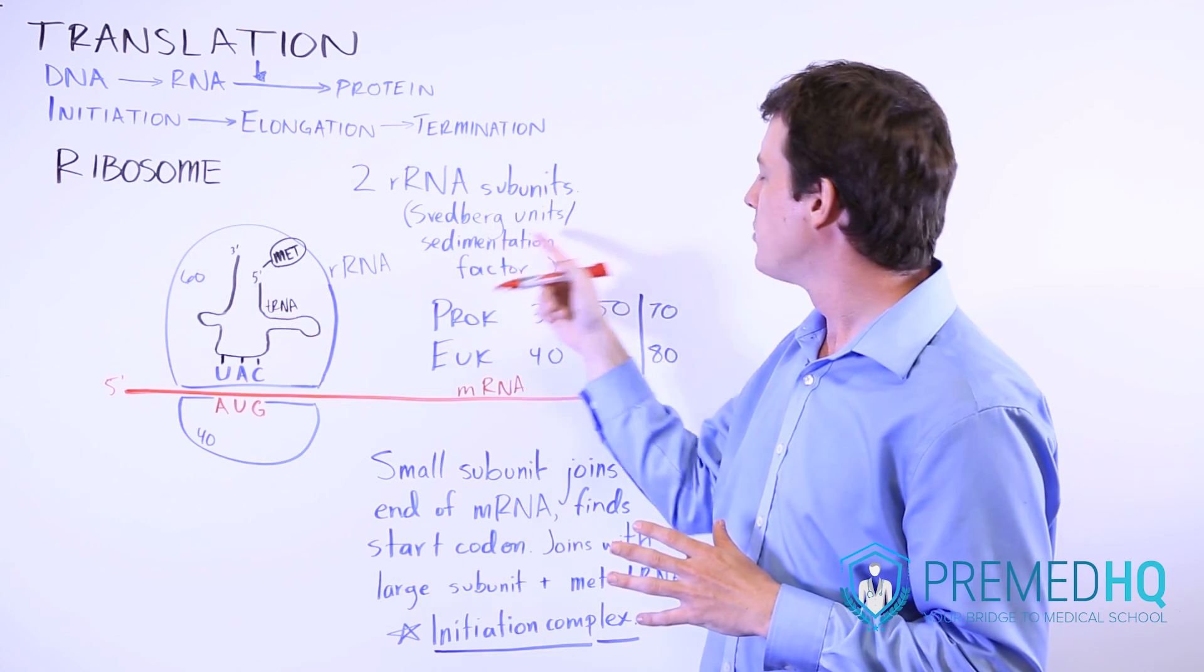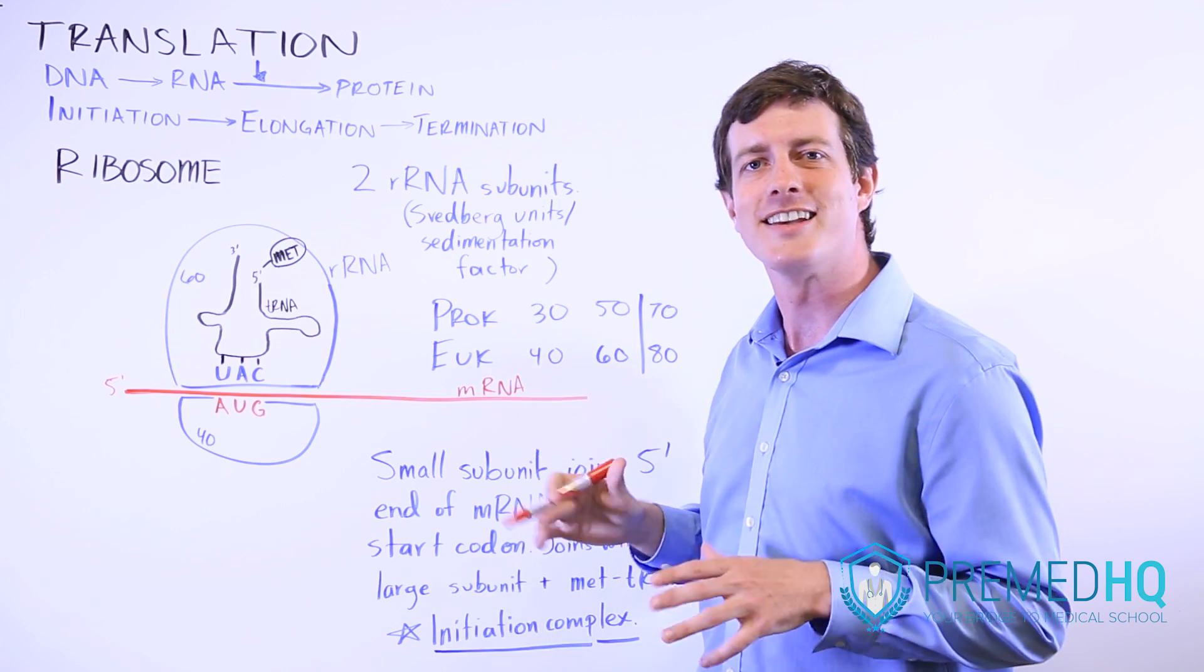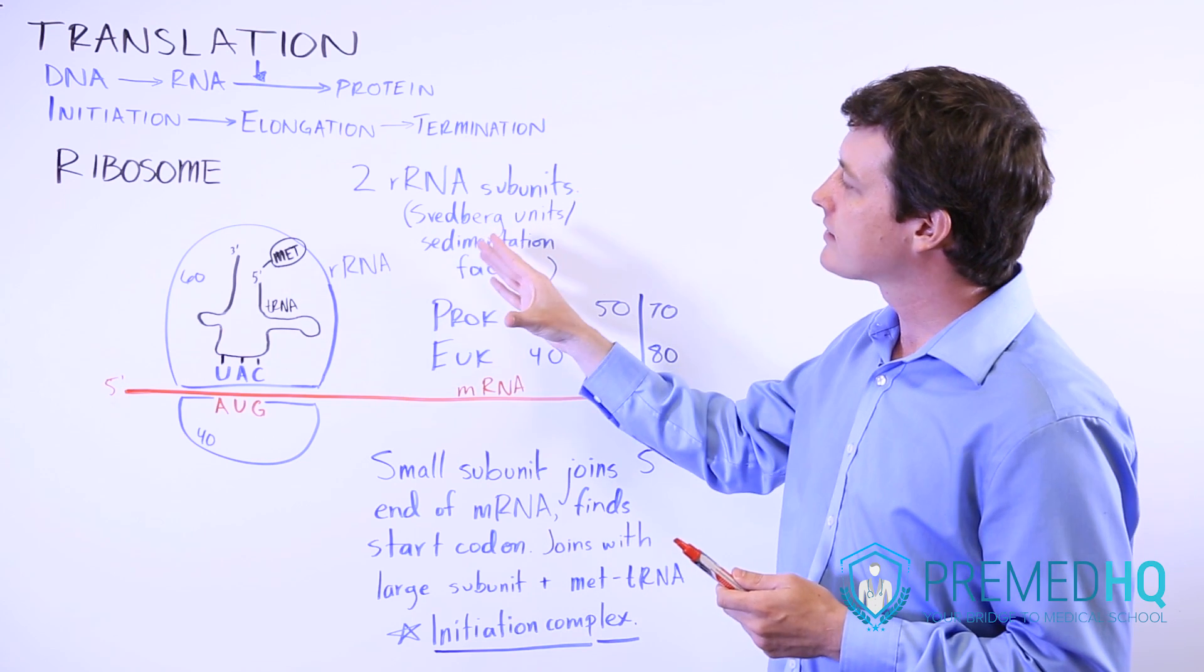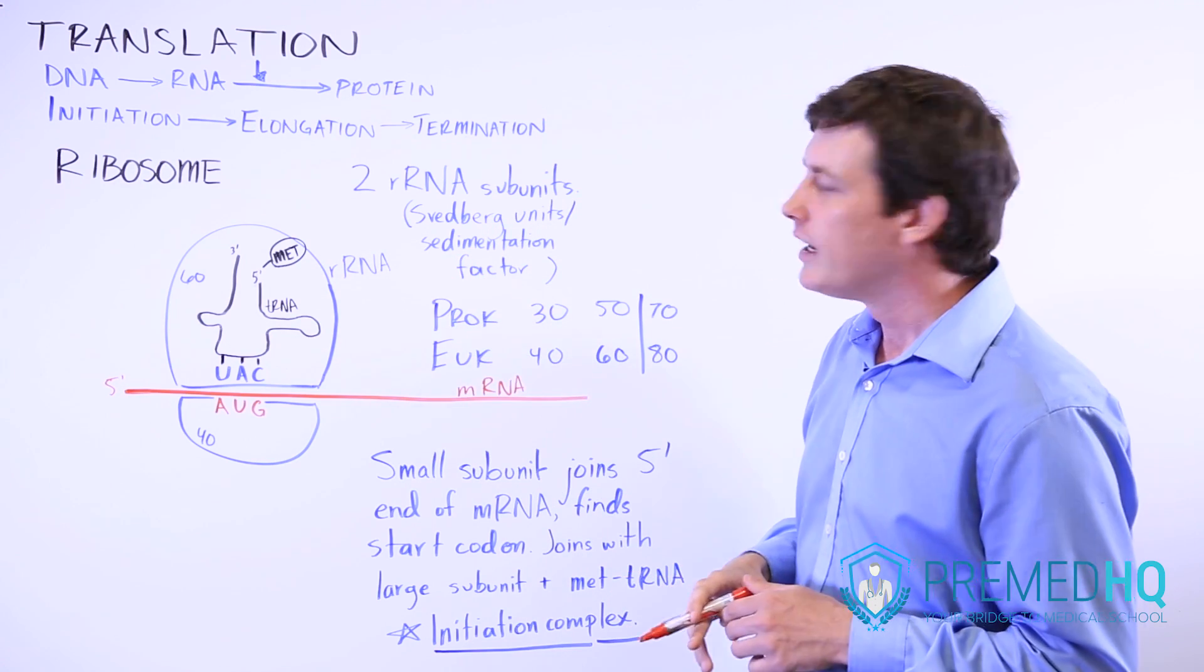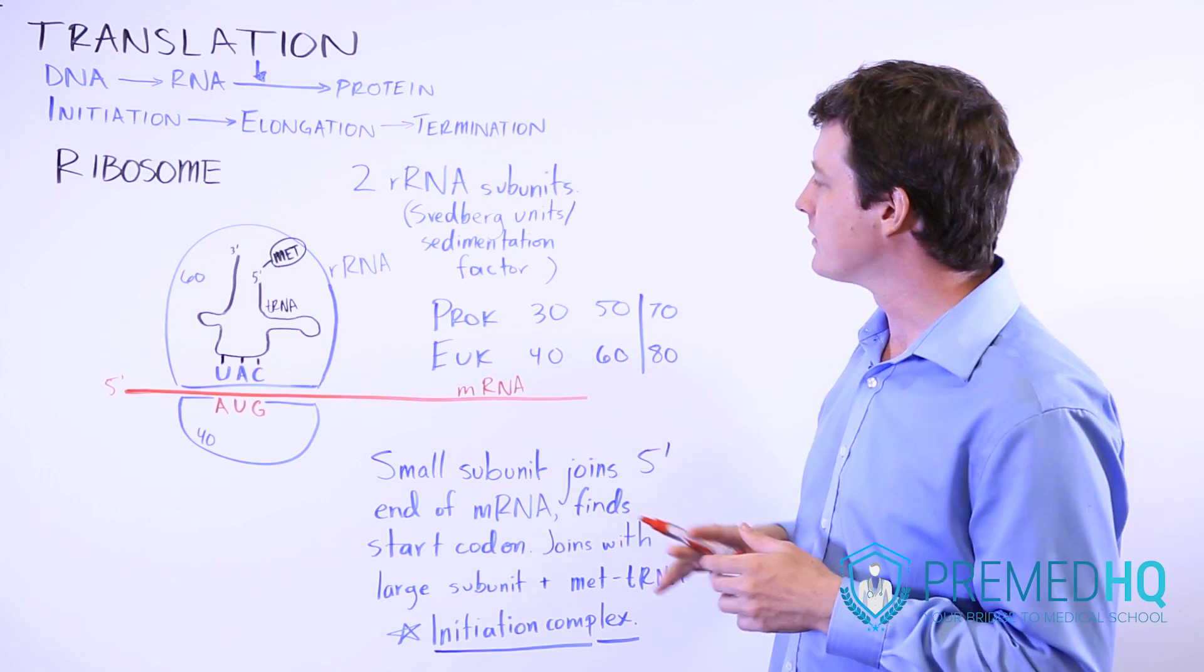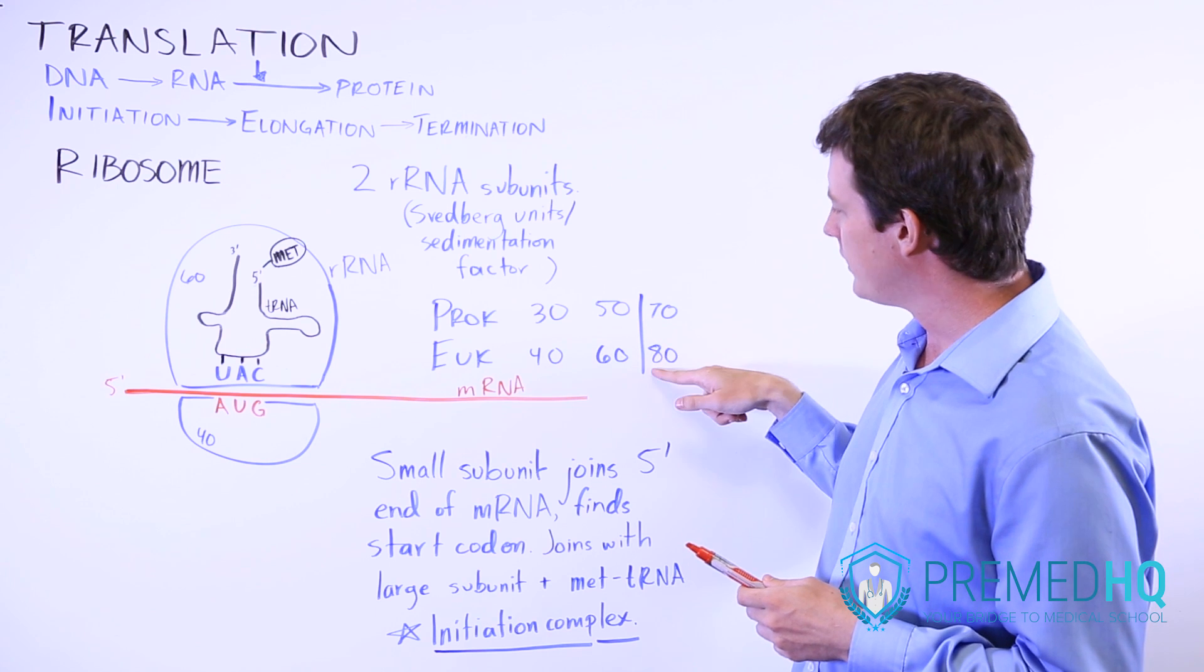The Svedberg units or sedimentation factor is really the only place you're likely to see it on the MCAT, but recognize that term if it does come up. Now, the sizes are different in prokaryotic and eukaryotic cells. Our videographer came with a great mnemonic for how to organize this. Basically, you go 3, 4, 5, 6, 7, and 8.